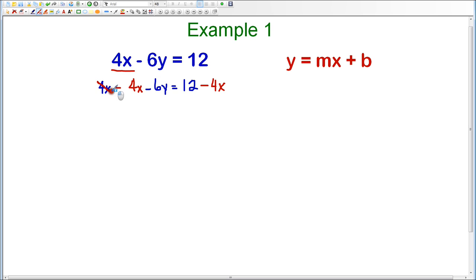So 4X minus 4X is 0. That is gone, which was my original goal. So what I have left now is negative 6Y equals 12 minus 4X. Now, because slope-intercept form typically has the X term first, we can take this term negative 4X and write it first. You just have to make sure that you take the sign in front. As long as you take the sign in front, you're okay to move the terms around. So negative 4X and then that's a positive 12, so it's plus 12.